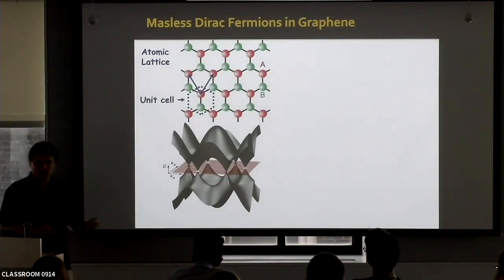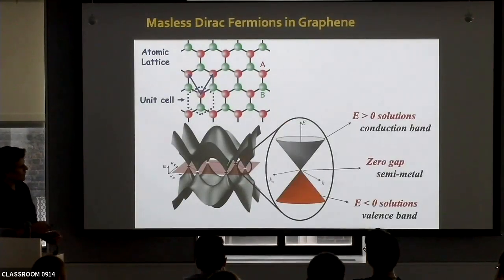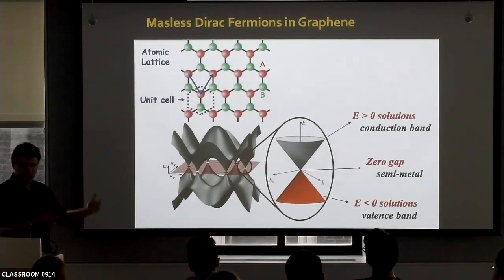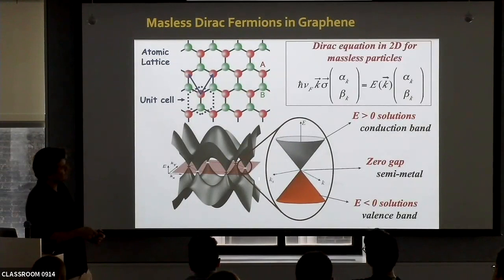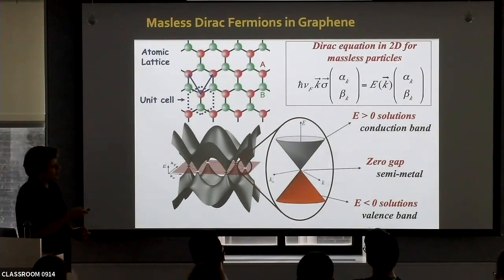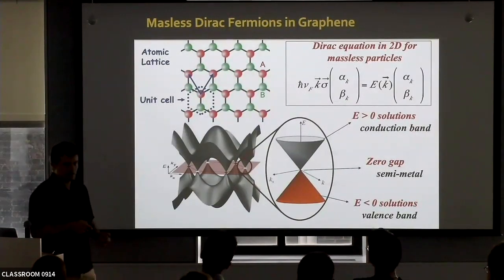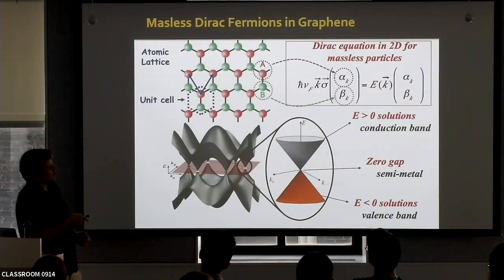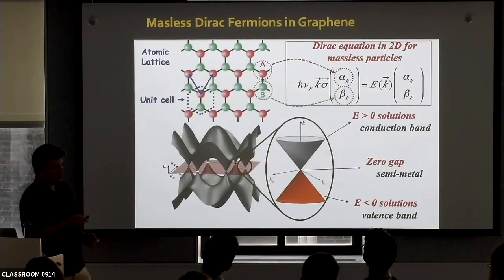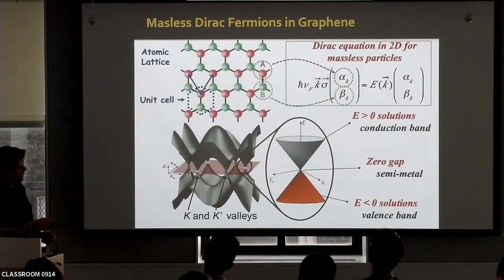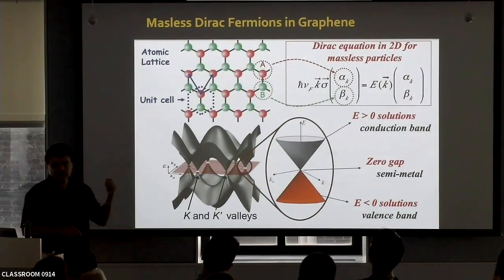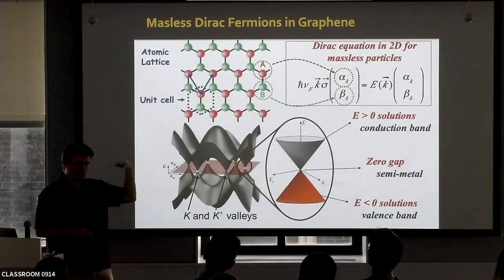You can calculate the electronic structure of graphene using a simple model, and it gives this very unusual electronic structure where near the Fermi energy you have a massless, linear energy-momentum dispersion, leading to analogies with ultrarelativistic particles. When you write down the Hamiltonian for the dispersion, it turns out to be the Dirac equation in two dimensions for massless particles. In graphene, the spinor tells you whether the electron wavefunction is on the A or B sublattice — a pseudospin. Electrons in graphene have a fourfold degeneracy: spin-up, spin-down, valley K, valley K-prime.